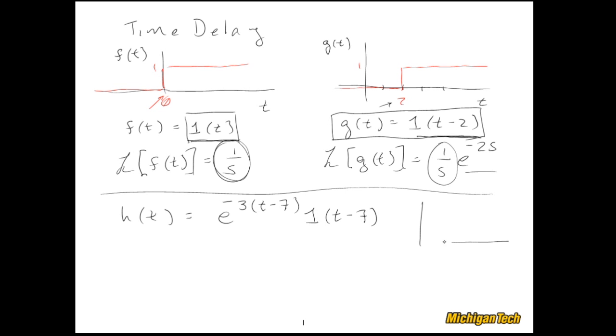If we were to look at a plot of this function h(t), switch over to red. At t equals 0, it's exactly 0. As a matter of fact, it's 0 all the way up until this unit step turns on. Let's say that point is right there, so let's say that is 7 seconds.